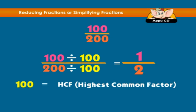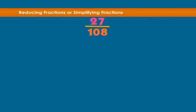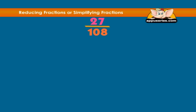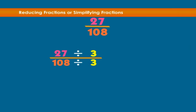Let's look at one more example: reducing 27 over 108. What goes into the numerator and the denominator? 3 goes in, so let's divide it out. 27 divided by 3, over 108 divided by 3, equals 9 over 36.